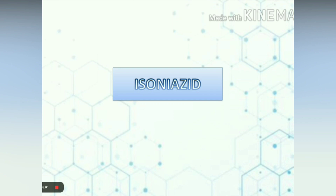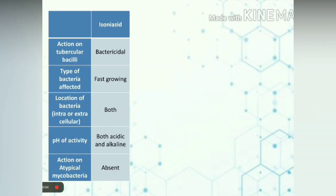Let us begin with isoniazid. Isoniazid is a bactericidal drug which acts against fast-growing bacteria located both intracellularly and extracellularly. It is effective in both acidic as well as alkaline medium. It is an excellent drug and is an essential component of all anti-TB regimens. However, its action on atypical mycobacteria is absent.